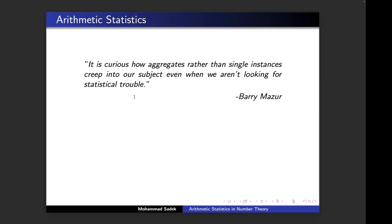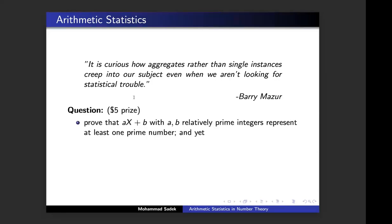He is supporting this claim with a question — and he offered a $5 prize for whoever can answer it. That was in one of the Erdős Memorial talks. The question is: you choose a and b relatively prime, and then you think about a linear map ax + b. Can you prove that this linear map represents infinitely many primes?